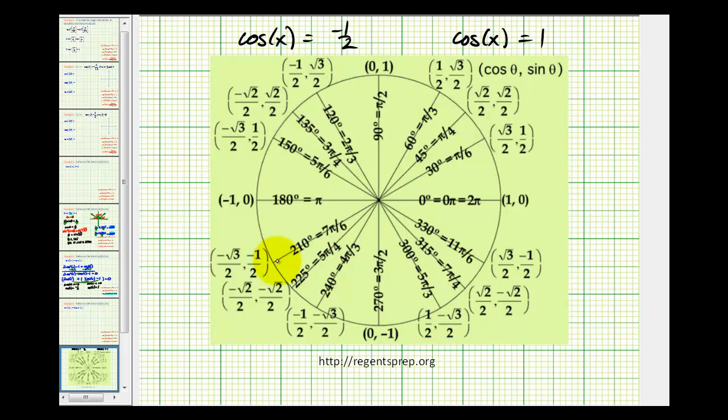Well, x is negative in the second and third quadrants. Here's an x-coordinate of -1/2, and here's an x-coordinate of -1/2. So cos(x) = -1/2 at 120° or 2π/3 radians, as well as 240° or 4π/3 radians.